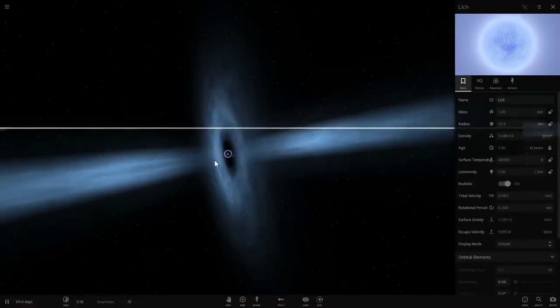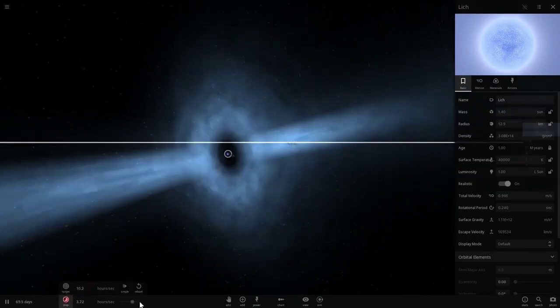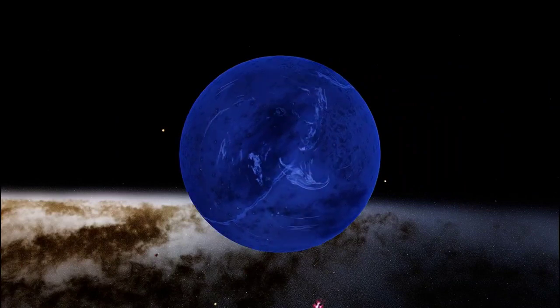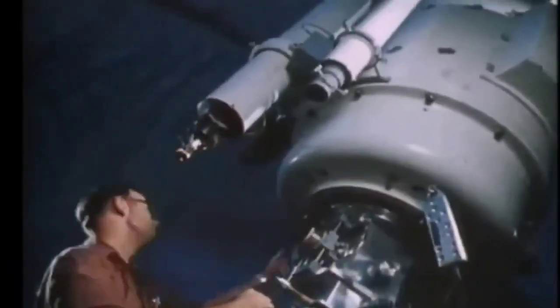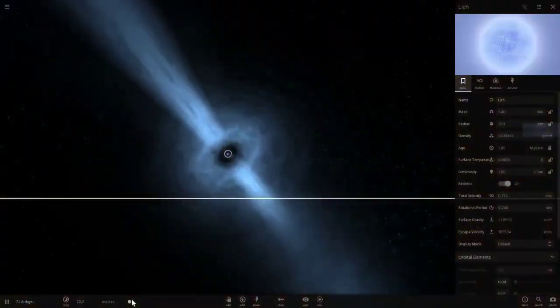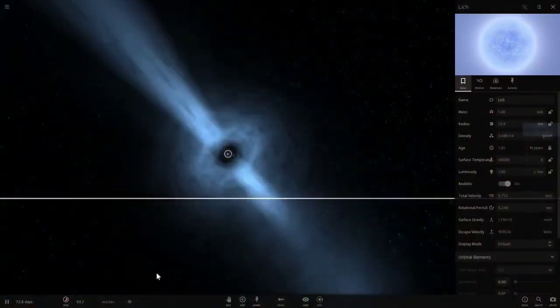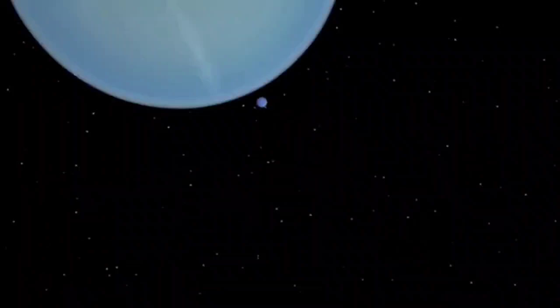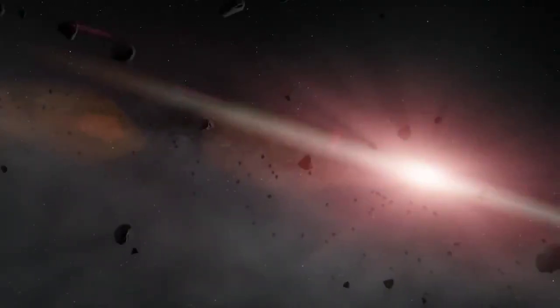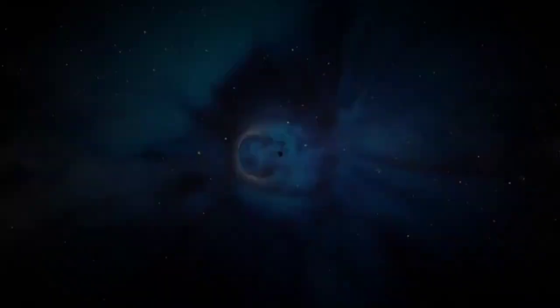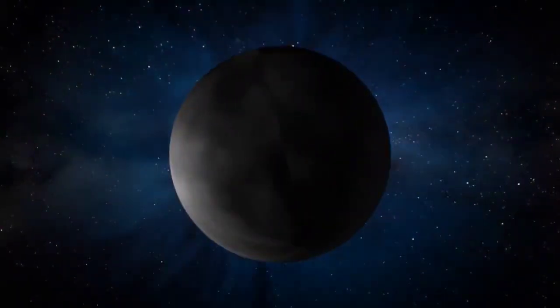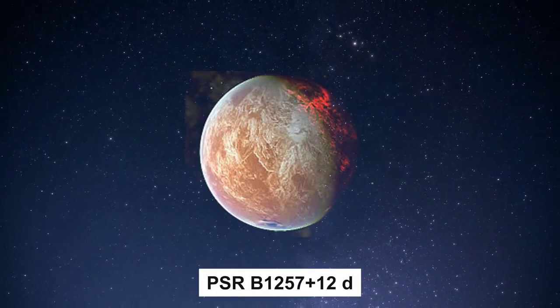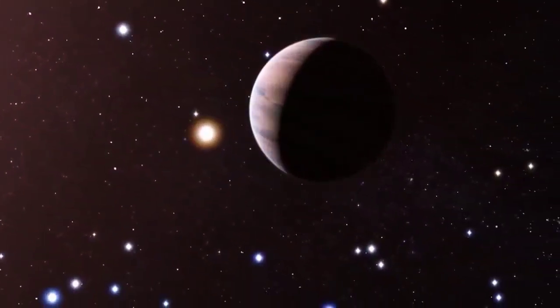This exoplanet completes one orbit around its star every 25.3 Earth days. The extreme environment surrounding PSR-B-1257-12b is another reason why scientists have deemed it unusual. The intense radiation and strong gravitational forces from the pulsar likely stripped away any atmosphere the planet may have had. Additionally, PSR-B-1257-12b is not alone. It is part of a planetary system that also includes two other exoplanets, PSR-B-1257-12c and PSR-B-1257-12d, which are also subject to the same extreme environment.